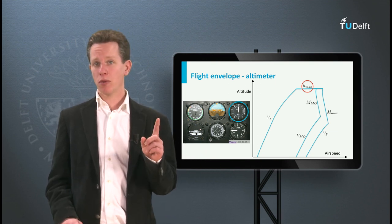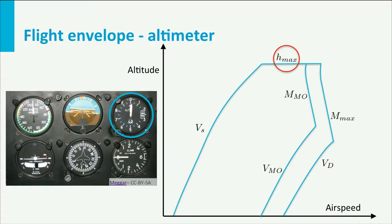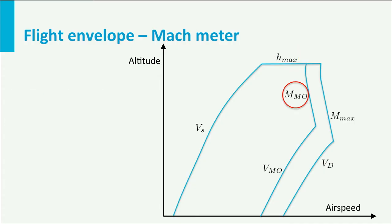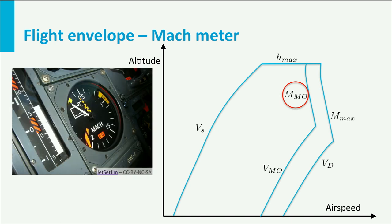This leaves us with only one operational limit to discuss. The maximum operating Mach number. Aircraft which are able to fly in the transonic speed regime always have a Mach meter on board. The limit indicated here is a fixed Mach number and therefore also a fixed limit on the Mach meter. It is beyond the scope of this lecture to explain how this instrument works exactly. What I can say for now is that the Mach number can be determined from the pressure ratio of the dynamic pressure and the static pressure. The dynamic pressure is measured by the airspeed indicator and the static pressure by the altimeter.